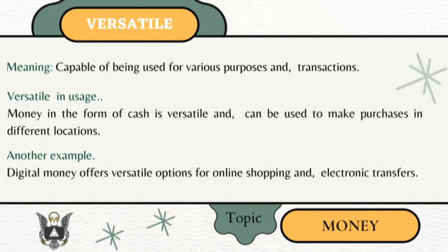Versatile — meaning capable of being used for various purposes and transactions. Money in the form of cash is versatile and can be used to make purchases in different locations. Digital money offers versatile options for online shopping and electronic transfers.